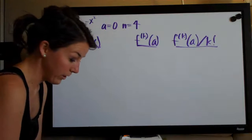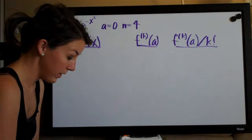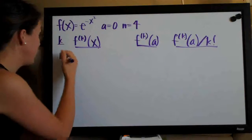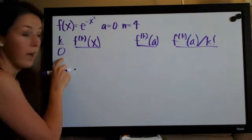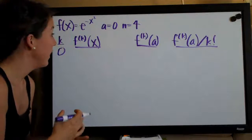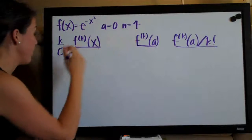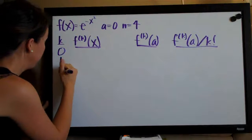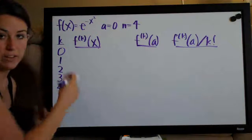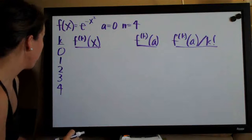Basically all we do is start with zero — you always start with zero here. And then you just number down until you get to whatever number n is equal to, so in this case four: zero, one, two, three, four. If n equals six you'd number down to six, but in this case it's just four.